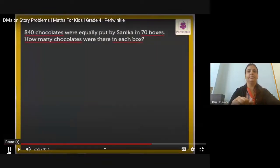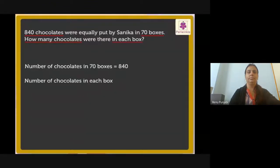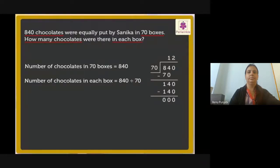The video continues showing the chocolate statement solution: the number of chocolates in 70 boxes equals 840. Number of chocolates in each box is how many? To find the number of chocolates in each box, divide the total number of chocolates, 840, by the total number of boxes, 70. We get the answer as 12. Thus, there were 12 chocolates in each box.